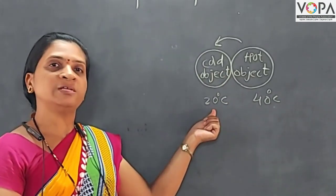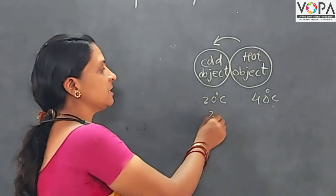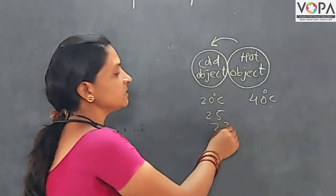So what happened? This 20 degree Celsius is now increasing 25. Then 27.